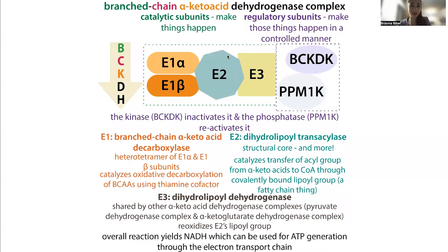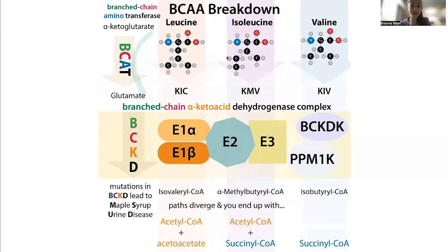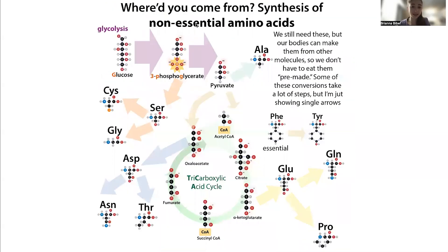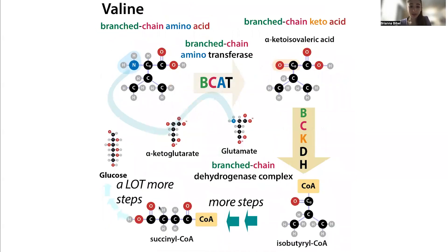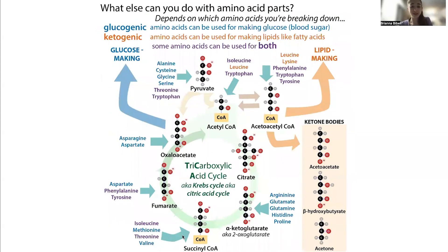So we can't make valine, but we can break it down through the branched-chain amino acid complex. When we break it down, we actually get succinyl-CoA, and succinyl-CoA can enter the tricarboxylic acid cycle, also known as the Krebs cycle or the citric acid cycle. This can produce oxaloacetate, which can be used to make glucose, and so we call valine glucogenic.